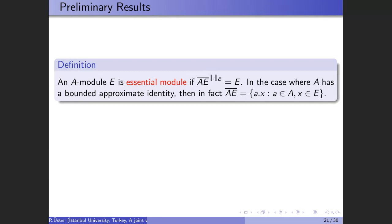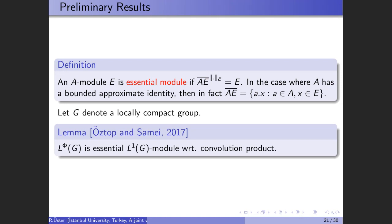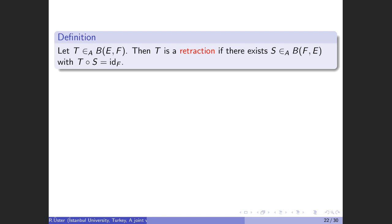Let A be a Banach algebra and E be a left Banach A-module. E is called essential if A·E is dense in E, where A·E is the linear span of {a·e : a in A, e in E}. If A has a bounded approximate identity, then we can take A·E with this set. A bounded linear operator T from E to F satisfying the A-module morphism condition is called a retraction if there exists a bounded linear operator S from F to E such that S satisfies the left A-module morphism with this property.